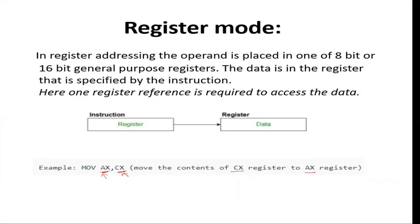Next is the register mode. In this mode we get the operand or the data in a register — it can be a general purpose register or a special purpose register that is mentioned in the instruction. For example, 'MOV AX, CX' means that we have to move the contents of the CX register to the AX register. As the name suggests, we get the operand in the register.